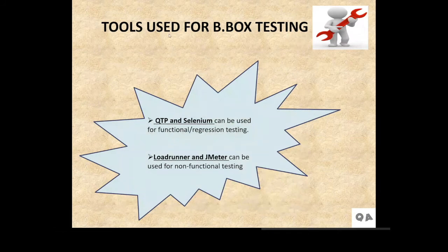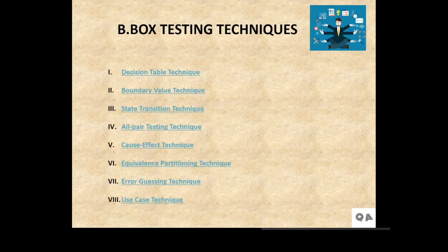Now comes the tools which we use in black box testing. For regression testing or functional testing, we use the tools QTP and Selenium. And for any non-functional testing, we use LoadRunner and JMeter. Then comes the testing techniques. When we create test cases or test scenarios, we use different techniques to find out any bug or any error. So there is a list of some of the techniques which we use in black box testing.